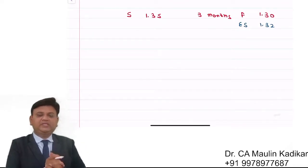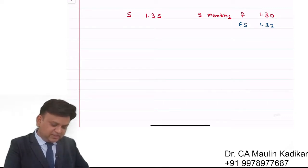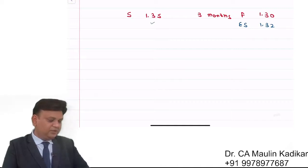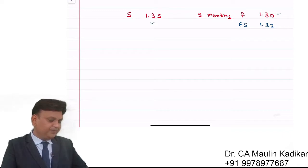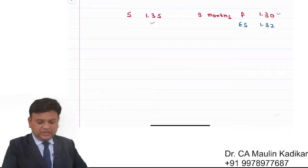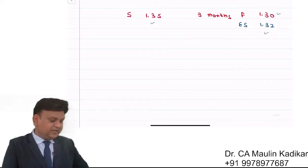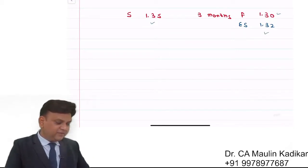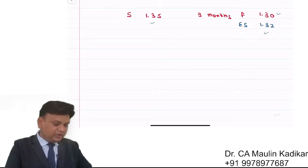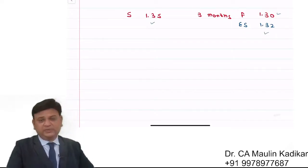We have a question where the spot exchange rate is $1.35 per pound, the forward exchange rate is $1.30 per pound, and you anticipate that the expected spot exchange rate is $1.32 per pound. The question is: suppose you want to speculate — meaning you want to make a risky gain in the forward market — what course of action would be required and what is the expected dollar profit or loss from this speculation?